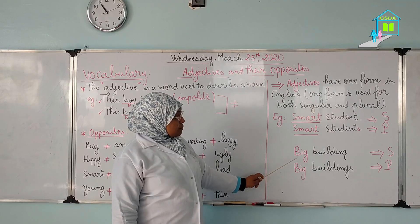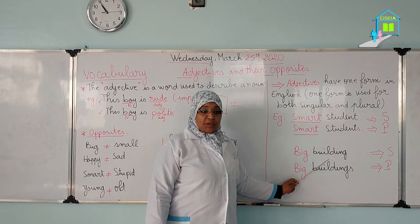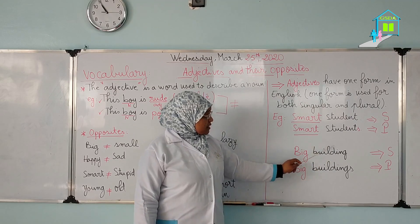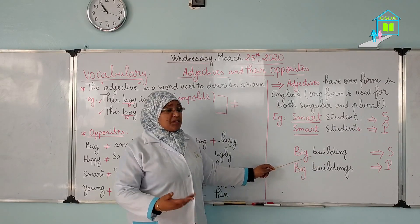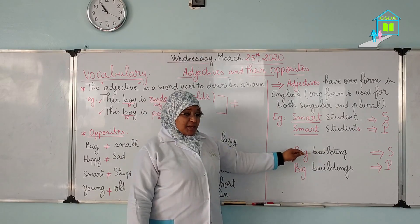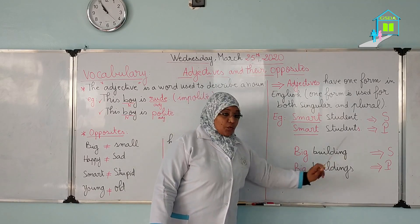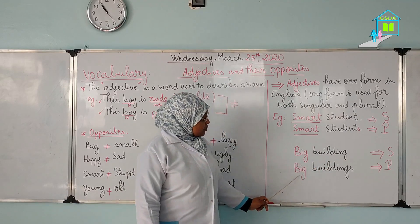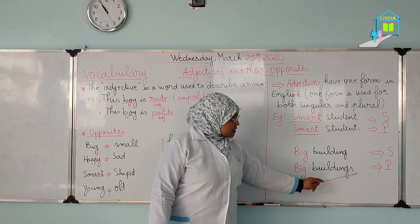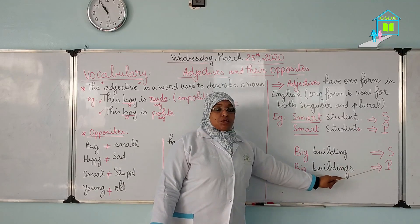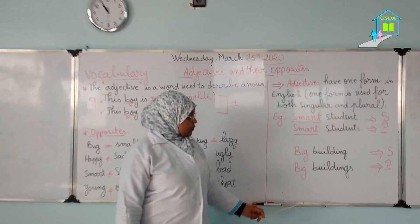Here we have 'big building' — building meaning house, school, hospital, etc. Big building in the singular form. And here we have 'big buildings' with an S, which is the plural form of building. The adjective big remains the same in both forms.